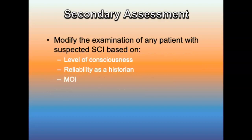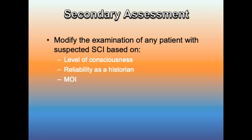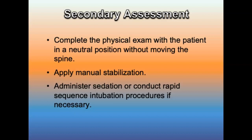For the secondary assessment, modify the physical exam of any patient with a suspected spinal cord injury. Consider the level of consciousness, reliability as a historian, and mechanism of injury. In high or intermediate risk mechanisms where the patient has not been immobilized, complete the physical exam in the neutral position without moving the spine. Apply manual stabilization and ask the patient not to move, or administer sedation or RSI for combative patients.